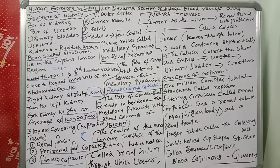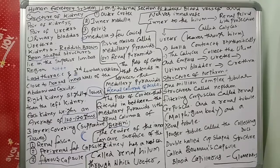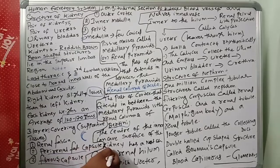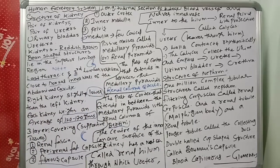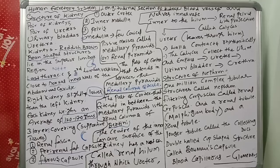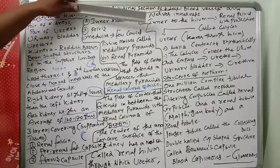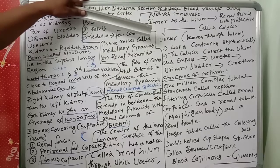The center of the inner concave surface of the kidney has a notch called the renal hilum. Through the renal hilum, the ureter, blood vessels, and nerves enter. Inner to the hilum is a broad funnel-shaped space called the renal pelvis, which has projections called calyces.